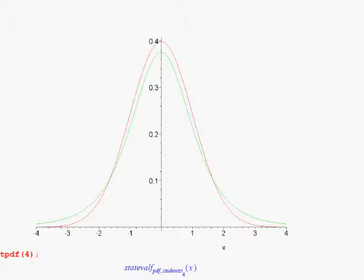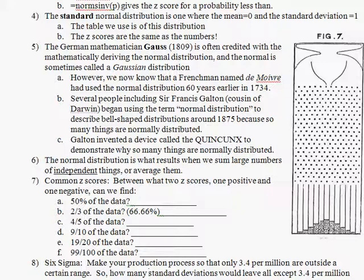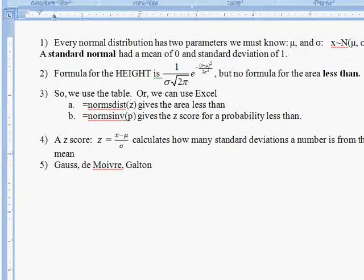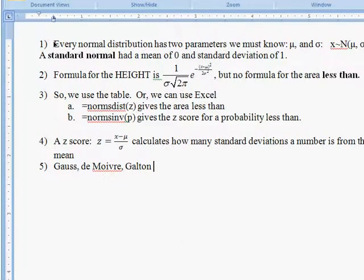A couple other important things of note about the normal distribution. Make sure you know every normal distribution has two parameters: the mean and the standard deviation. A standard normal has a mean of zero and a standard deviation of one. The formula for the height of a normal distribution is this ugly formula here. It's very rarely used because it just tells you the height.